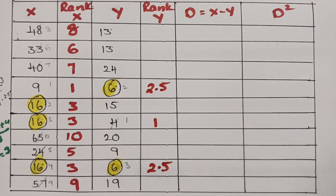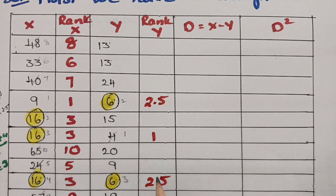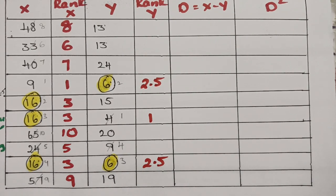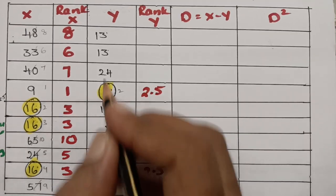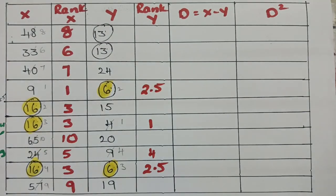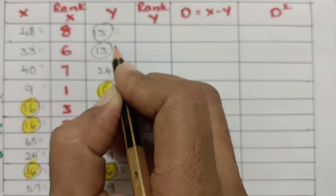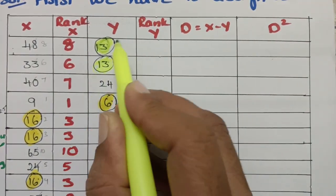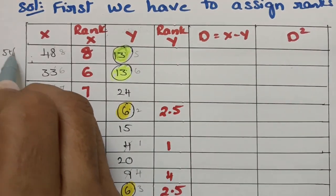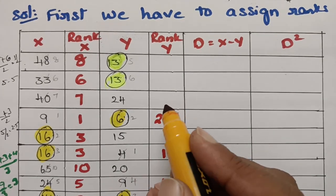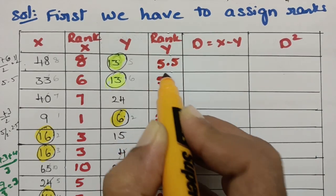After rank 4 for value 9, the next least is 13, which gets rank 5. Then 16 is repeated twice in the Y series, so those would be 5th and 6th ranks — but wait, 13 gets rank 5, and 16 is repeated for twice, making ranks 5 and 6. We take the average: 5 plus 6 divided by 2 equals 5.5. Both 16s get common rank 5.5, completing up to rank 6.